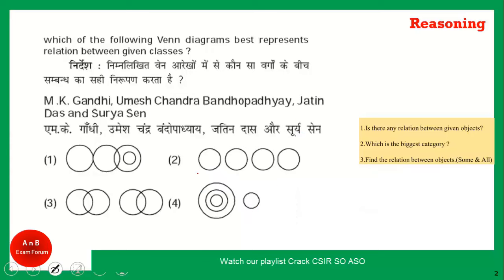Coming to the next question - whenever you find a names-type question, just go for option 2. Why? Because M.K. Gandhi cannot be Umesh Chandraupadhyay, Jatin Das, or Surya Sen. So there will be no relationship between these categories. This is M.K. Gandhi, this is Bandupadhyay, this is Jatin Das, and this is Surya Sen - no relationship between them.